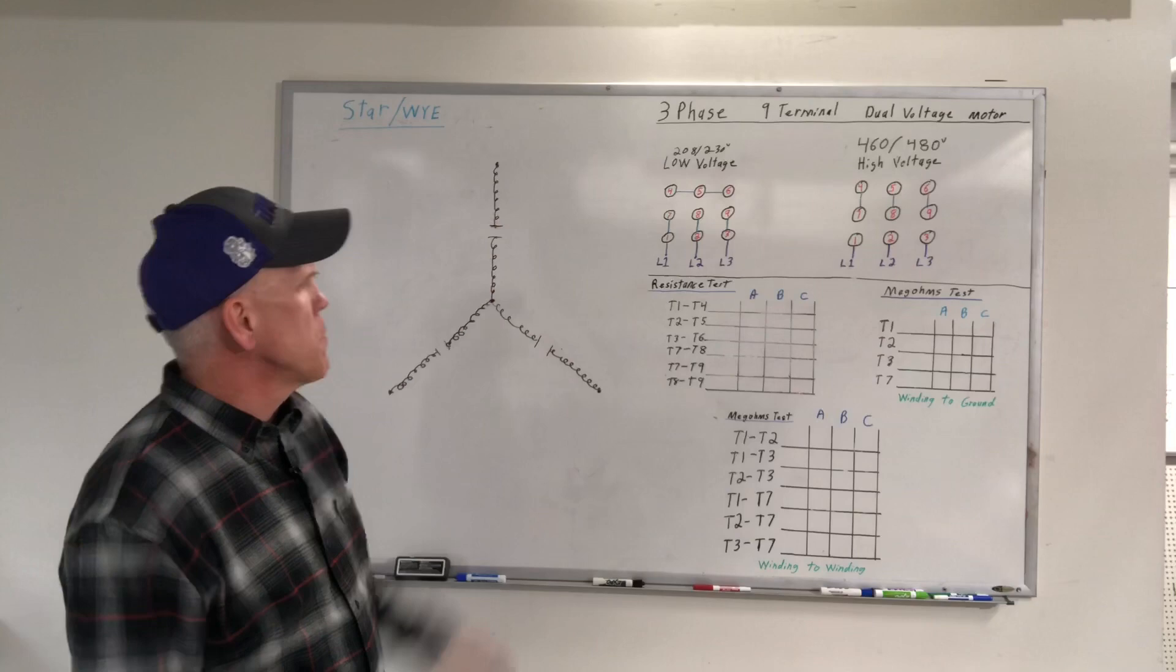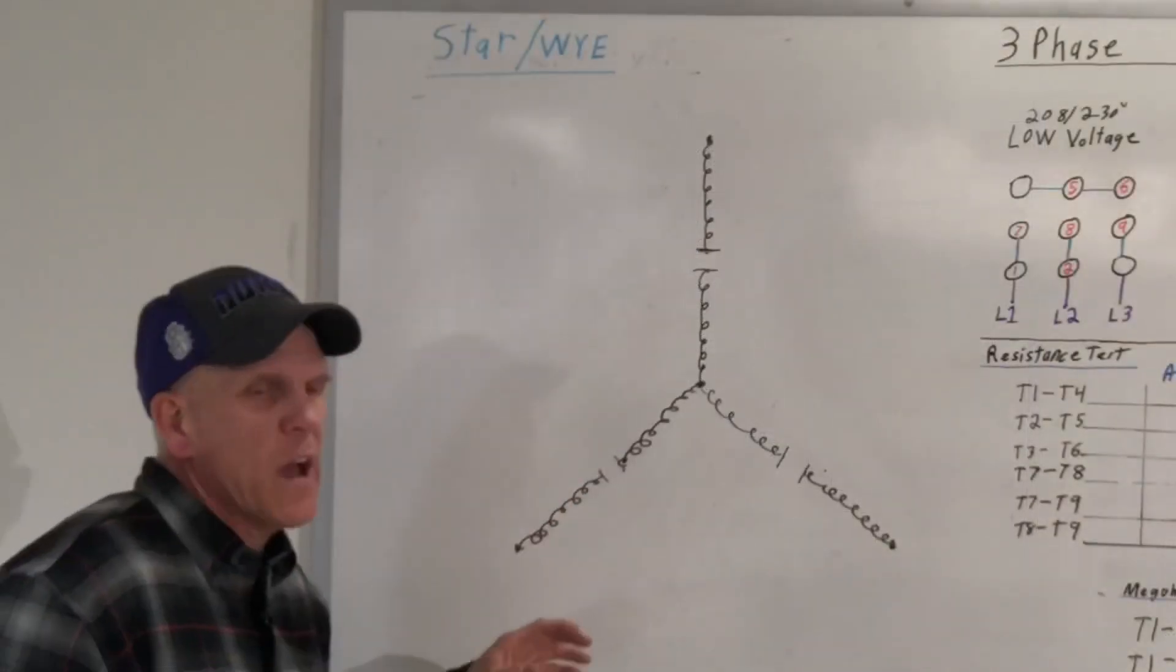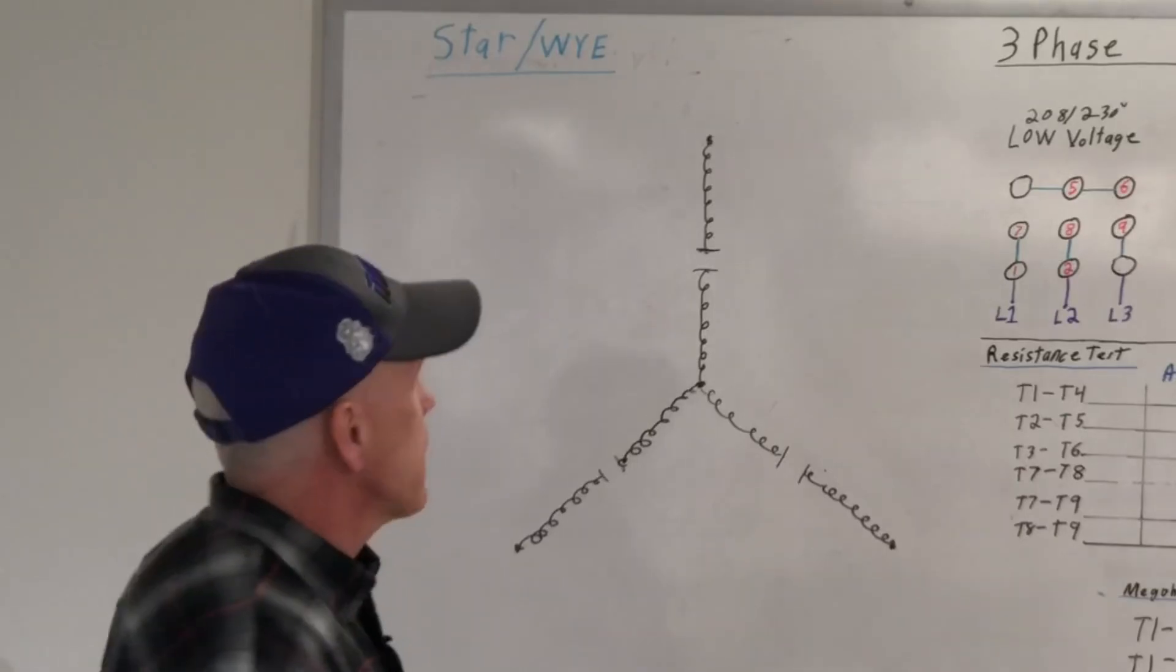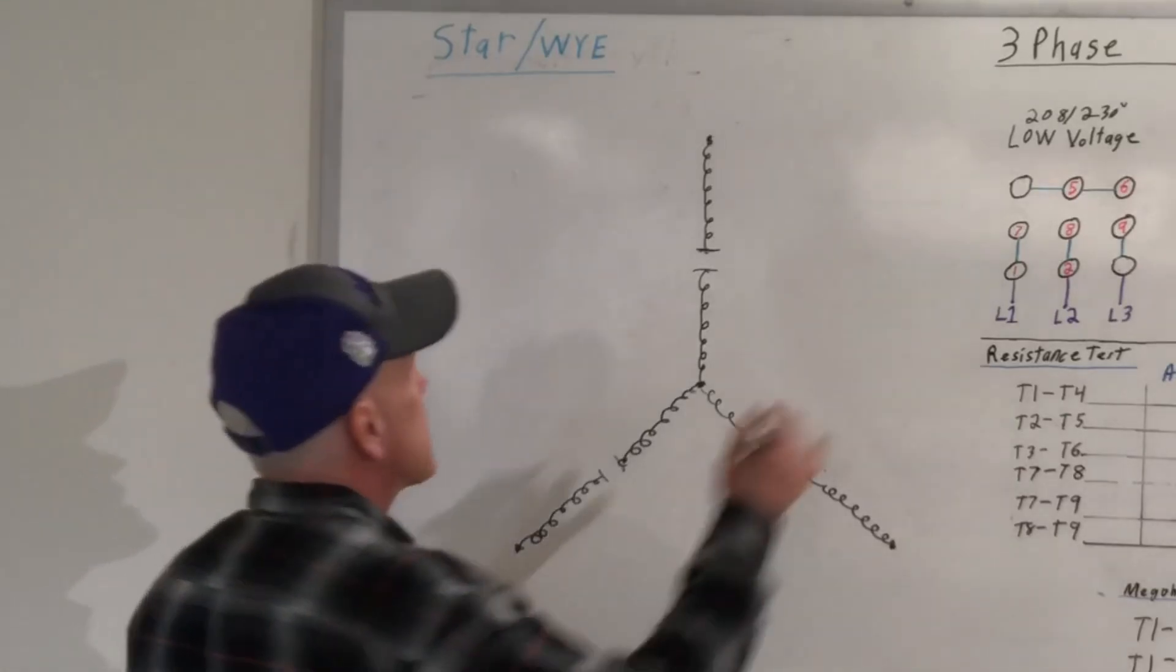But I just want to talk a little bit about this. Once you draw this a couple times, you're going to get it down. It's a very simple thing to draw. It's just a Y configuration. I'll show you how to number it. Make it easy.